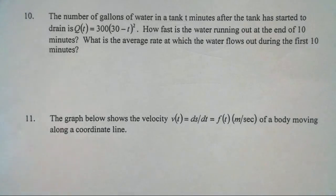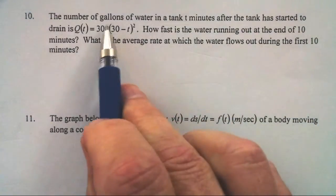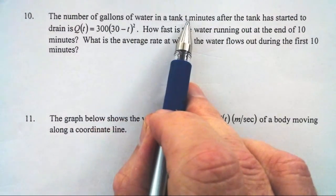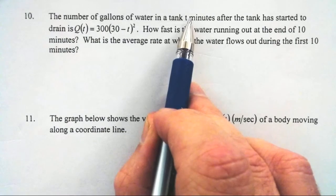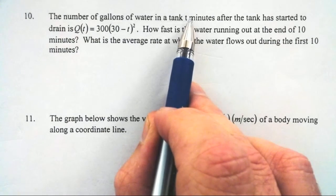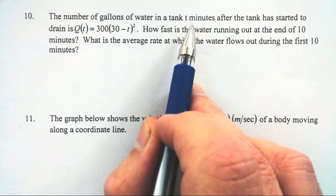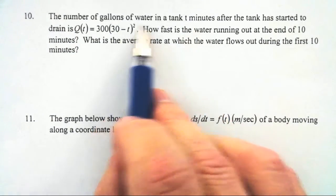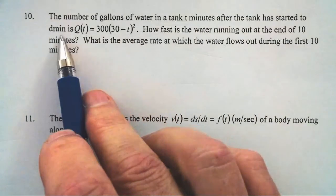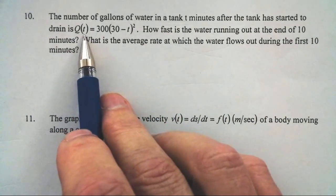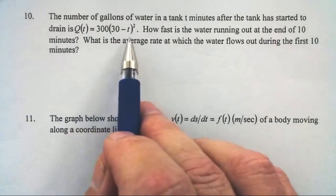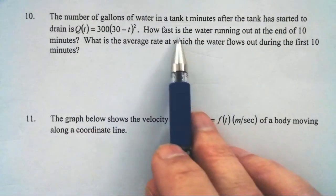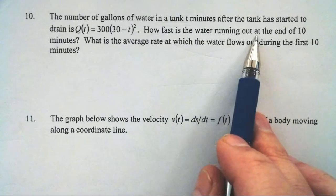The number of gallons of water in a tank, t minutes after — so number of gallons of water, that's just an amount. That's just like our position function, really. That's like where the squirrel is located on the wire. The number of gallons in the tank is given by Q of t equals 300 times quantity 30 minus t, squared. How fast is the water running out?